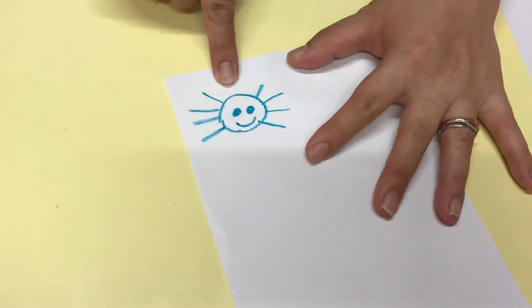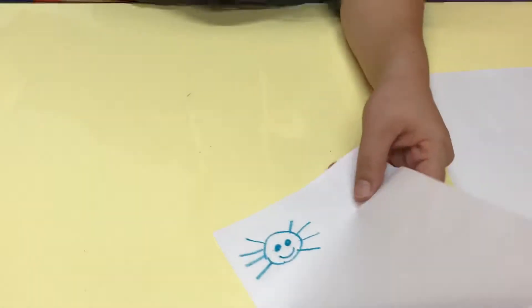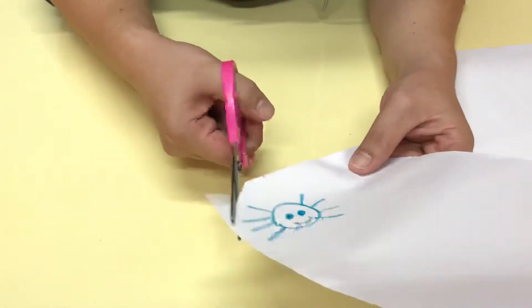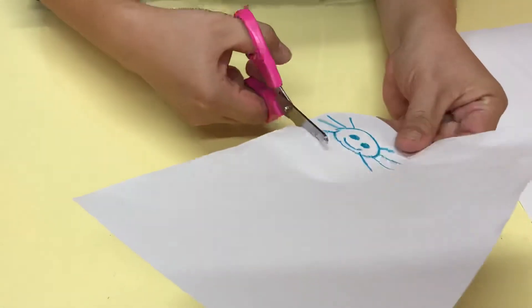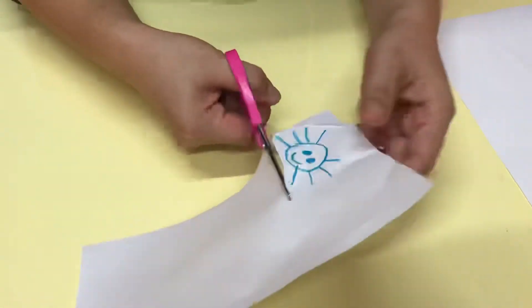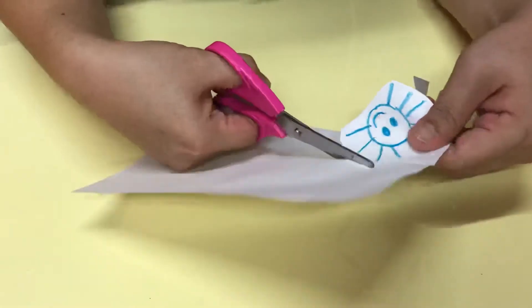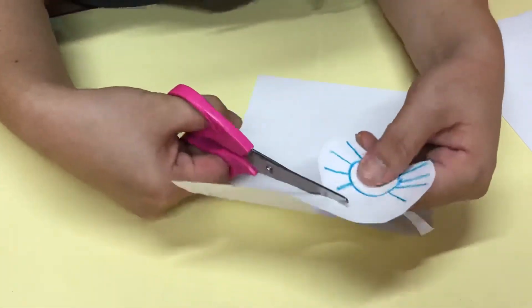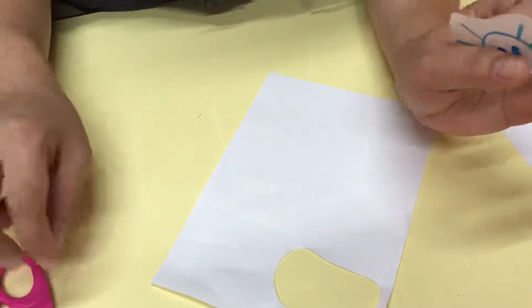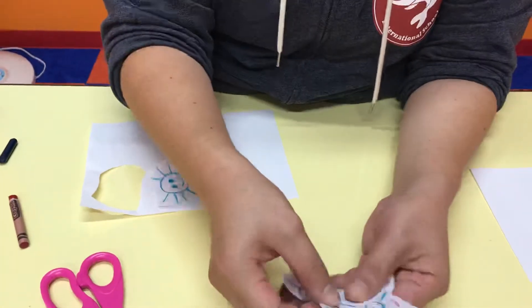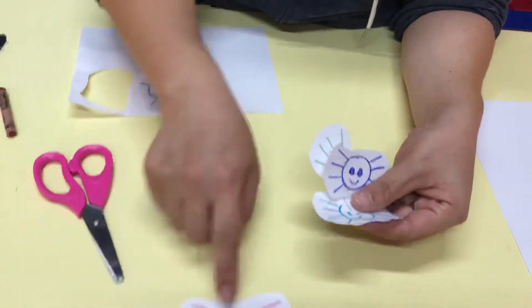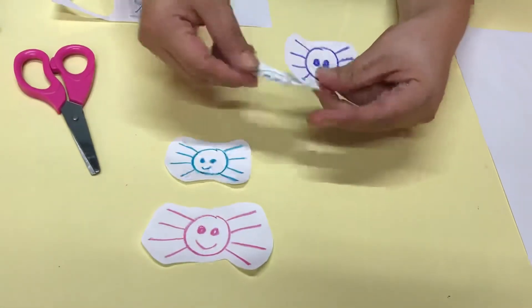When you're done, you just cut around the spider. Just watch your fingers - keep them away from the scissors. Cut around the spider. But not one spider, no. You need to make four spiders. So I have four spiders.